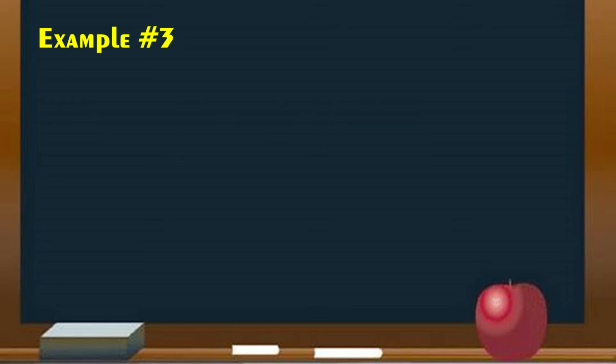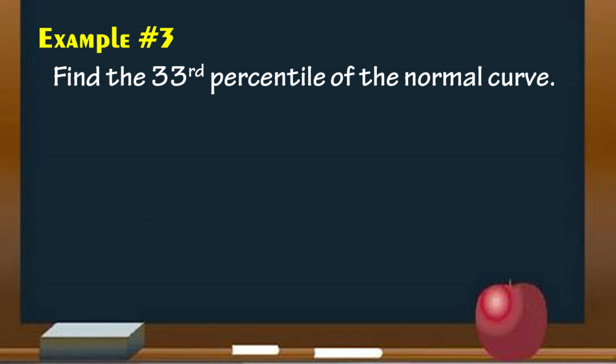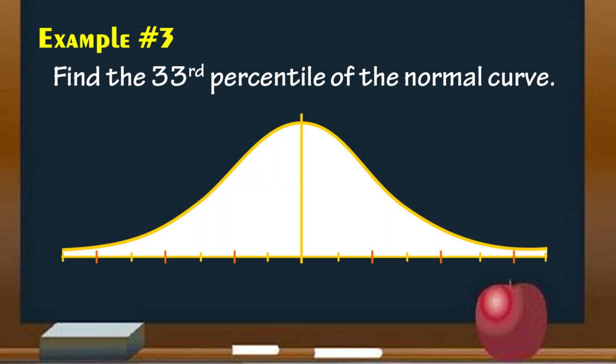Example number 3, locate the 33rd percentile under the normal curve. First, draw a normal curve. Second, express it as a probability. It is 33% or 0.33.